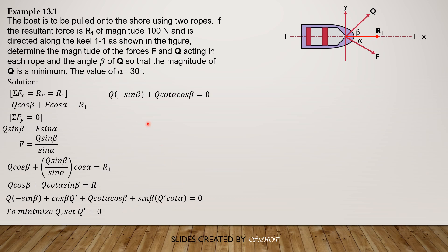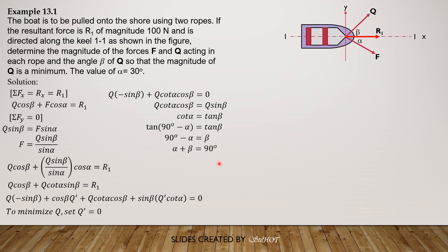Since cotangent of alpha is the same as tangent of 90 degrees minus alpha, then tangent of 90 degrees minus alpha equals tangent of beta. Equating the angles because we have the same function tangent, so 90 degrees minus alpha equals beta, meaning alpha plus beta equals 90 degrees. This is the relationship for angles alpha and beta in order to minimize Q. Since alpha is given, 30 degrees plus beta equals 90 degrees.